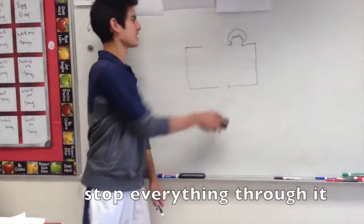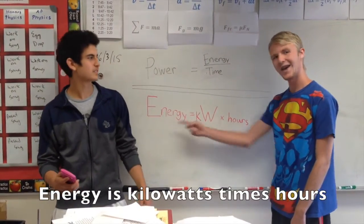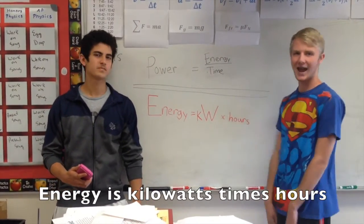Dead parts in series stop everything through it. That's why light circuits are in parallel units. Energy over time is power. Energy is kilowatts times hours.